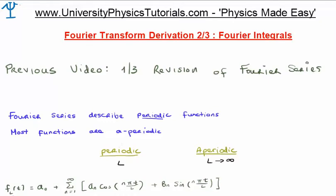Fourier series describe periodic functions. Most functions however are aperiodic. So how do we make a link between periodic functions and aperiodic functions? We can consider the period going to infinity, and suggest that if the period goes to infinity, we have the link between a periodic and aperiodic function.